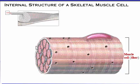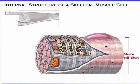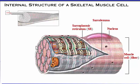Let's look at the internal structure of these unique cells. The nucleus is the cellular structure that contains the genetic material. The sarcolemma is the specific name for the plasma membrane of the muscle cell. The sarcoplasmic reticulum, or SR, is the name for the endoplasmic reticulum of the muscle cell. Its interconnecting tubules surround each myofibril like the sleeve of a loosely knit sweater. Terminal cisternae are sac-like regions of the sarcoplasmic reticulum that serve as specialized reservoirs of calcium ions.